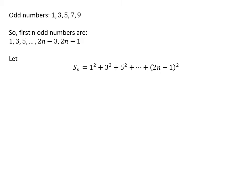Let Sn denote the sum of squares of first n odd numbers. If we add a number and subtract the same number from the sum, the sum remains the same. So let us add and subtract squares of first n even numbers — that is square of 2, square of 4, square of 6, and so on up to square of 2 times n.